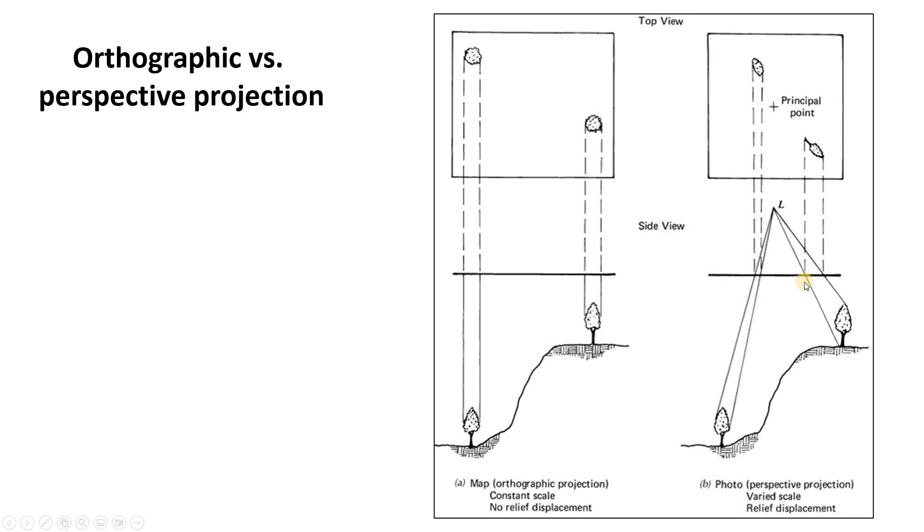So you can see that this creates a problem for objects of different height. For example this tree, the top and the bottom would represent only one point on an orthographic map projection. However in perspective projection the top of this tree maps out to a very different point than the bottom of the tree essentially because it's being viewed a bit from the side in this perspective projection. So that's the problem.